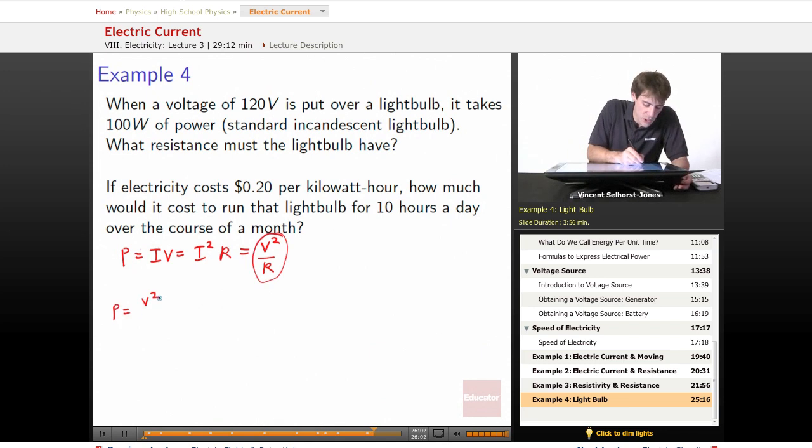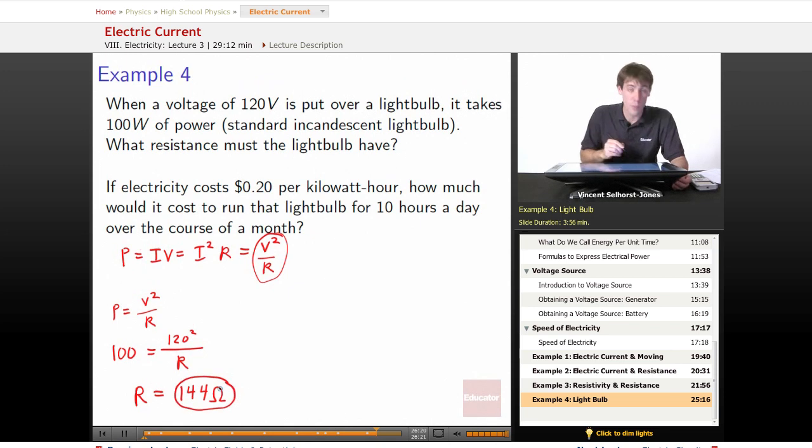So power equals V squared divided by resistance. We plug in the numbers we know, 100 watts is equal to 120 squared divided by a resistance of unknown. So the resistance winds up equaling 144 ohms. So 144 ohms.